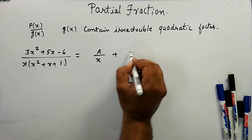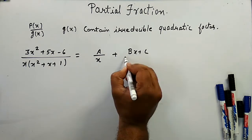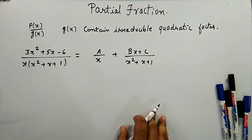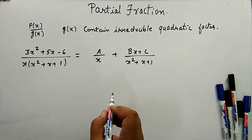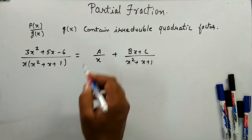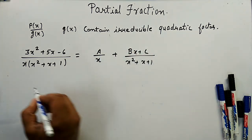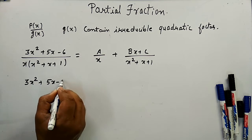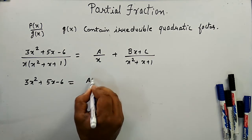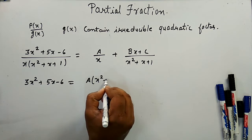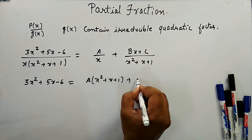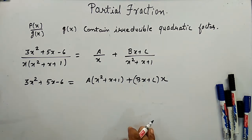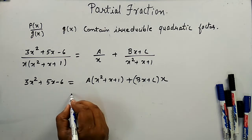The partial fraction form of this will be A/x + (Bx + C)/(x² + x + 1). Taking the LCM on the right-hand side, the expression reduces to: 3x² + 5x - 6 = A(x² + x + 1) + (Bx + C)·x.